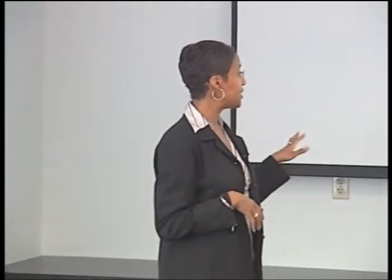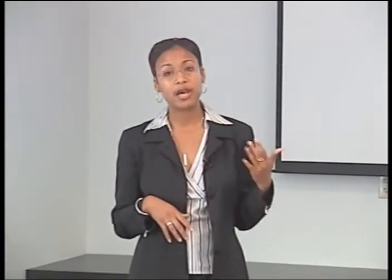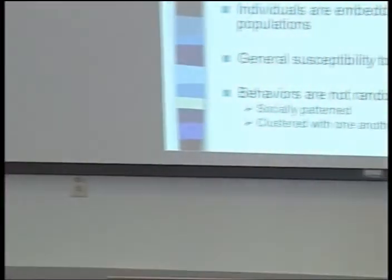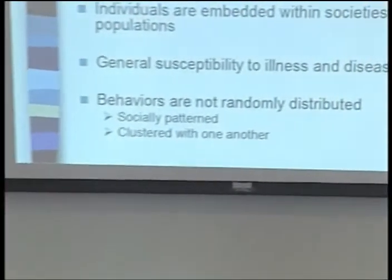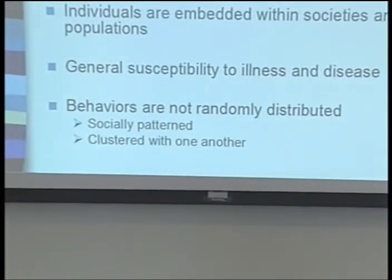And then finally, like disease patterns, behaviors are not randomly distributed. We've talked about this with the suicide example and the obesity example. It's important to understand how these behavior patterns and social factors are clustered and patterned with one another, and to appreciate the complexity of those interactions and how they affect populations.